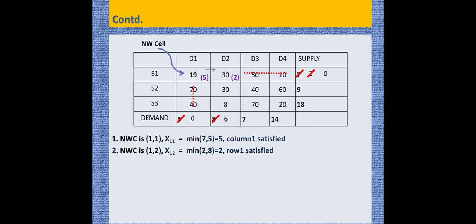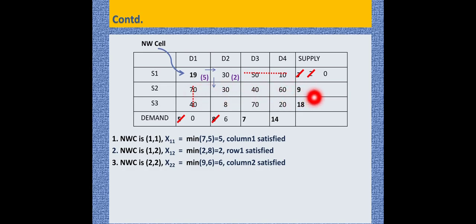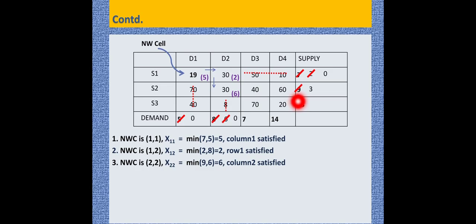The next Northwest Corner cell is identified. Supply is 9 and demand is 6. Minimum of 9 and 6 is 6, so 6 is allocated there. Since demand is satisfied, that column is struck off. The remaining supply is 9 minus 6, which equals 3.